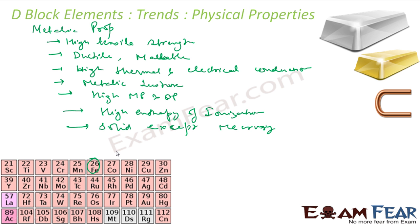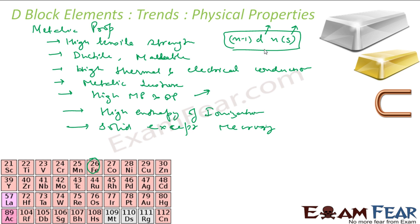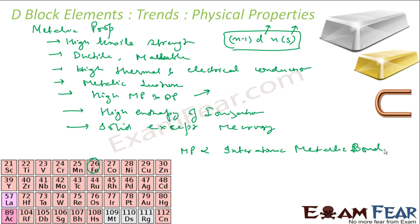Most d-block elements are metallic in nature. Now, why do they have high melting points? If you look at the electronic configuration, they have (n-1)d orbitals and ns orbitals — two valence orbitals. Electrons in these two orbitals take part in interatomic metallic bonding. Since there are more electrons available for bonding, the bond is stronger, and a stronger bond means a higher melting point.